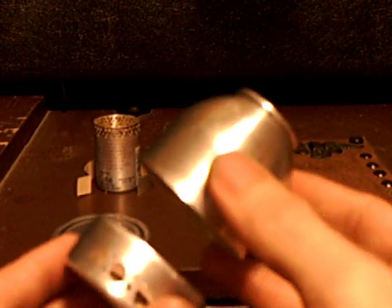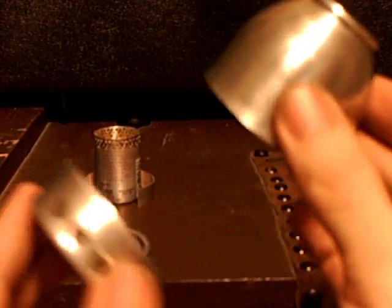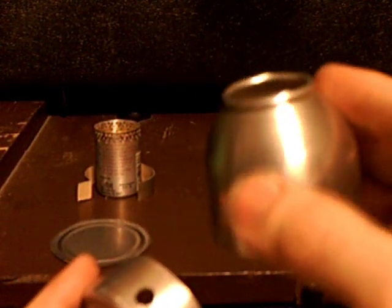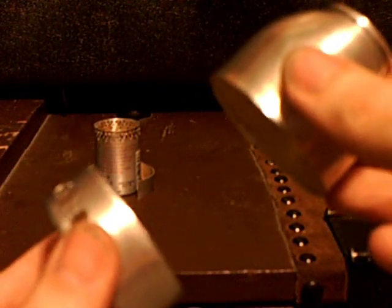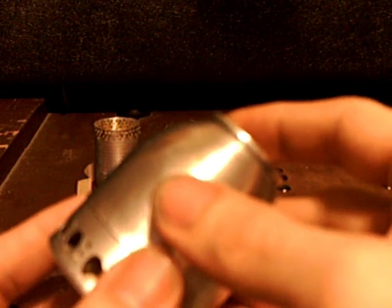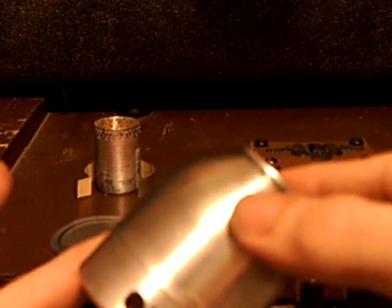This is the top of the can and the bottom of the can. First I used steel wool to remove the paint, remove the top, remove the bottom, flange the top, crimp the bottom so they fit perfect.